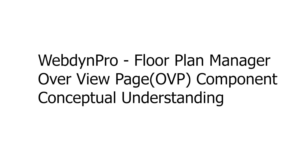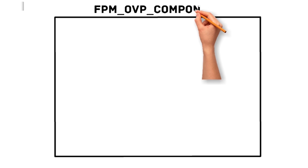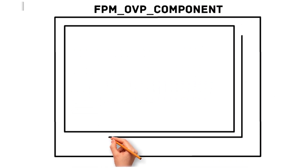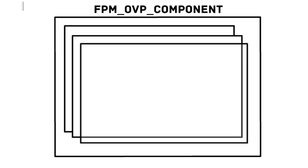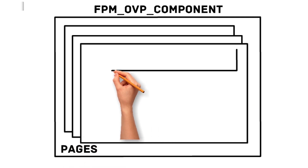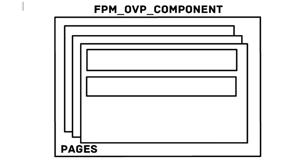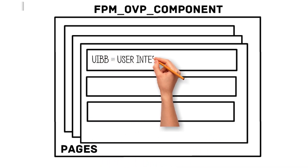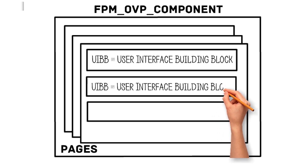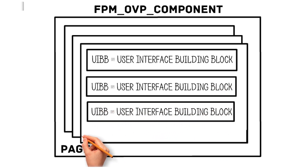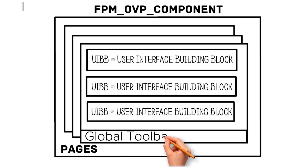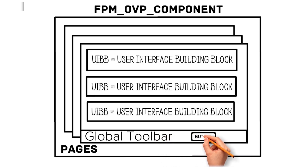Welcome to today's video. We are going to discuss the conceptual understanding of Overview Pages, shortly called OVP components. In this there will be an FPM OVP component, which is the majorly used component. This will have multiple pages, and in every page there will be multiple UIBBs — also called User Interface Building Blocks. At the top or bottom of the page there will be a global toolbar, and every global toolbar will have buttons.